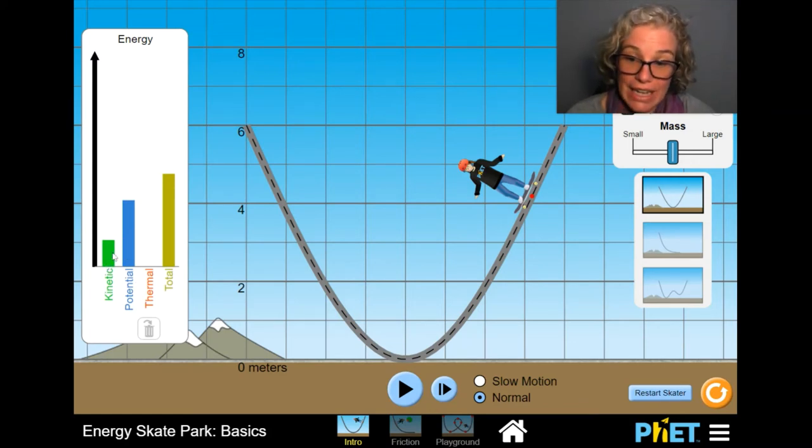And if I pause partway through, now we see there's some energy due to motion and some energy due to position. But if we were to stack those two on top of each other, it would equal the total energy of the skater.